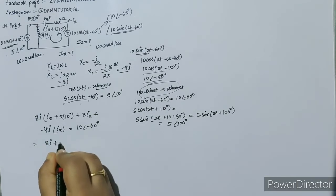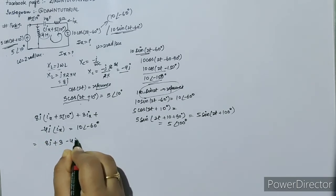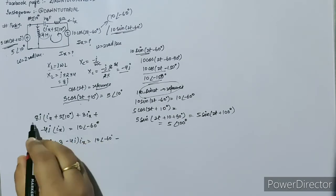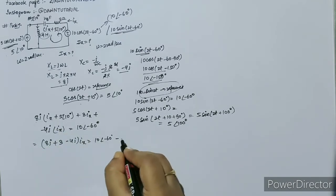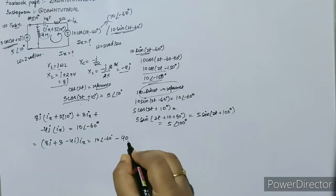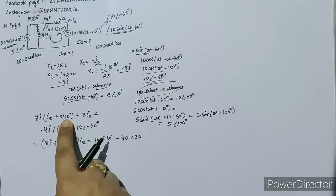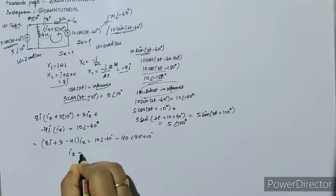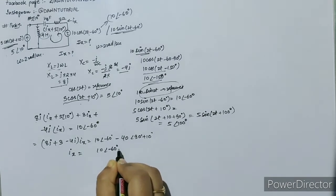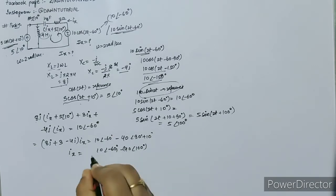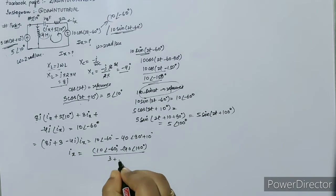Now calculate. This will be (8j + 3 - 4j)ix equals 10∠-60° minus, if we multiply 8 times 5, that's 40, and j is ∠90°, the angle 10° is already there, so 90+10=100°. So ix equals [10∠-60° - 40∠100°] divided by (3 + 4j).